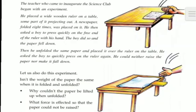Next, he unfolded the paper and placed it flat over the ruler on the table. Then he asked the boy to press the ruler again. In this case, the boy could never raise the paper or make it fall down. This is because in the second case, the paper is spread over the scale, so when he struck the scale, it moved only to some extent.